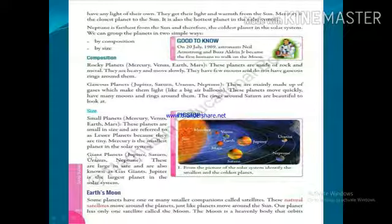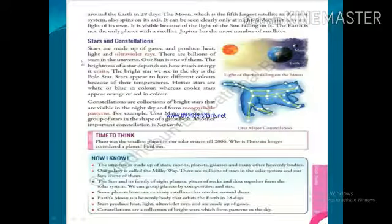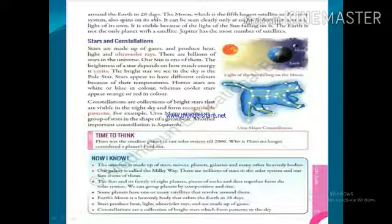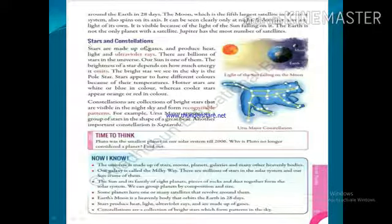Next point is Earth's moon. Some planets have one or many smaller companions called satellites. Our planet has only one satellite called the moon. Earth's moon is a heavenly body that orbits the Earth in twenty-eight days. Jupiter has the most number of satellites.